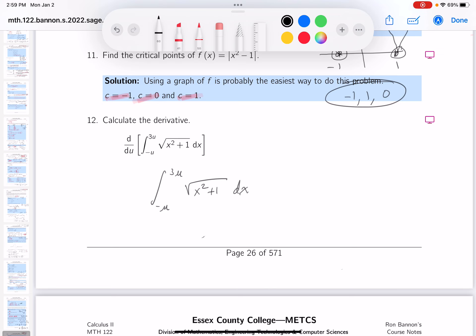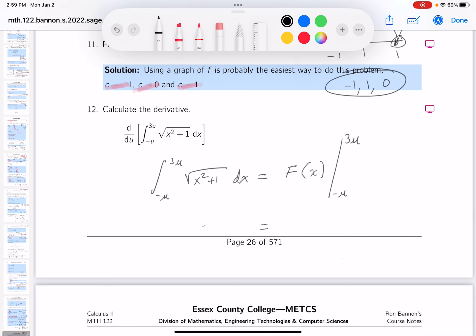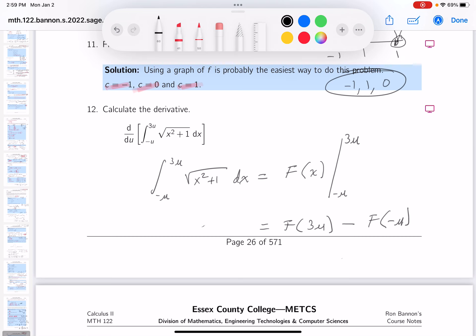But I want to write down what I'd be looking for. I'd be looking for the antiderivative, I'm going to call it big F of x, and I'd be evaluating that from minus u to 3u. And then I would evaluate it, the big F evaluated at 3u minus the big F evaluated at minus u. Now what do I know?